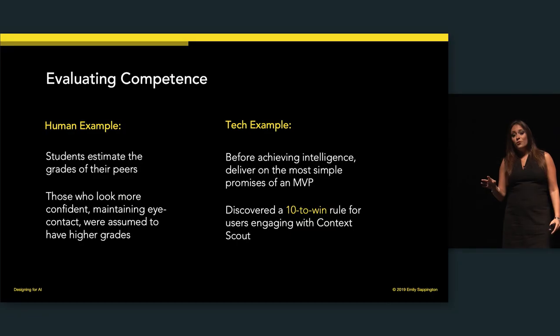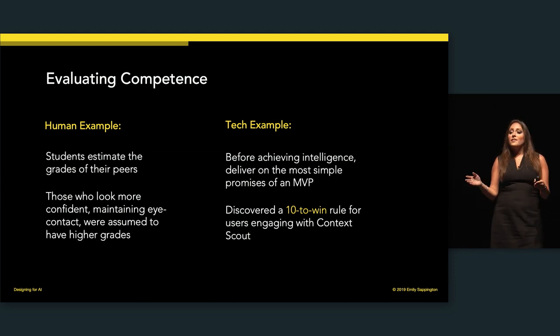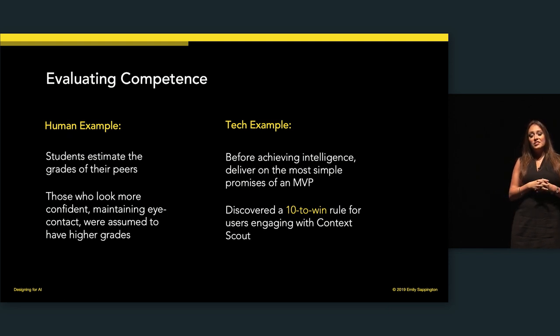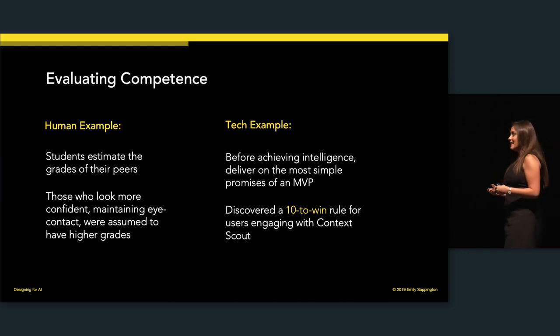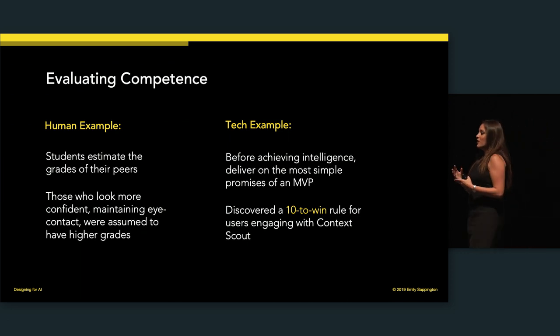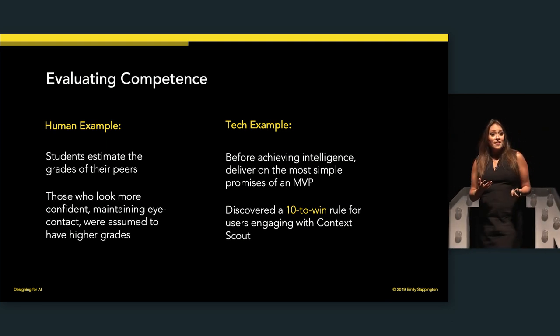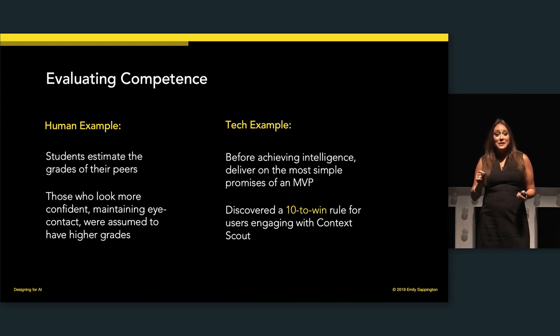What's interesting about this study is that it was about the perception of intelligence — one group of students decided that eye contact was the metric and measure for intelligence. I want people to think about what is that eye contact moment in your products. When can you start to hint at intelligence and competence with your users? With Context Scout, if we messed up in one instance in the first 10 websites they looked at, they would pretty much never use us again. These first impressions really, really matter.